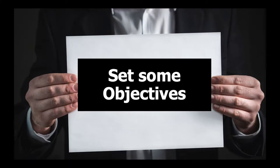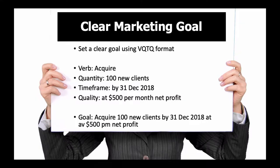The first thing is to set some objectives — set a clear marketing goal. I really like the VQTQ format: a Verb, a Quantity, a Time frame, and a Quality measure. The example is: 'We're going to acquire 100 new clients by the 31st of December 2018 at an average of $500 per month net profit.' The verb is 'acquire', the quantity is 100 new clients, the time frame is December 2018, and the quality measure is $500 per month net profit.